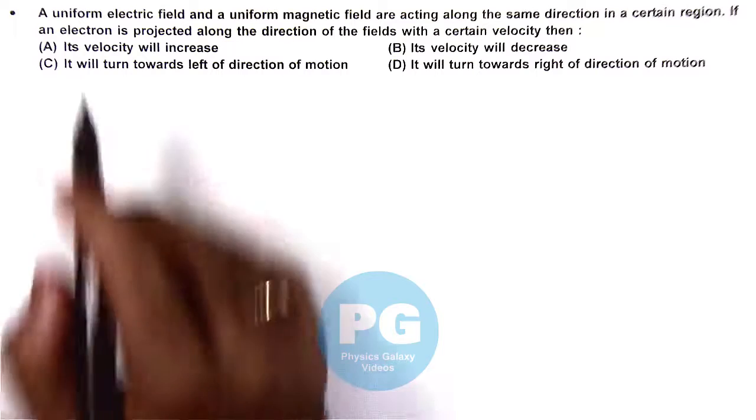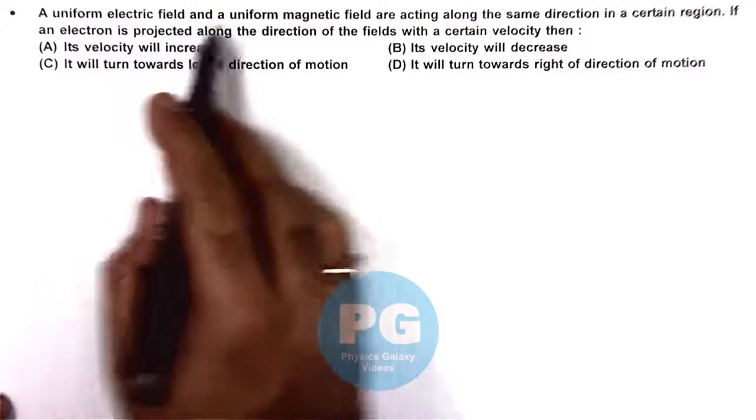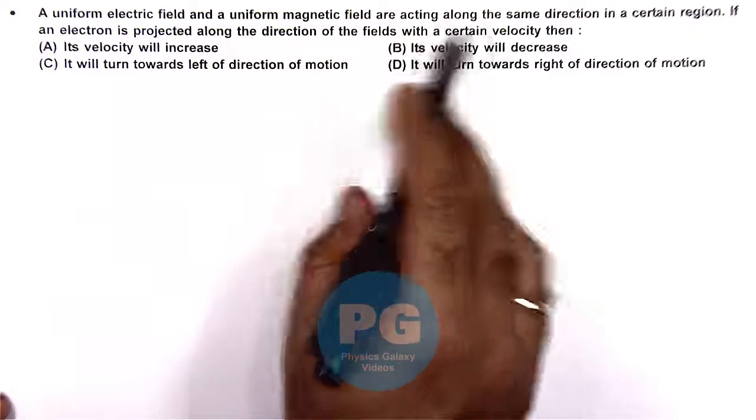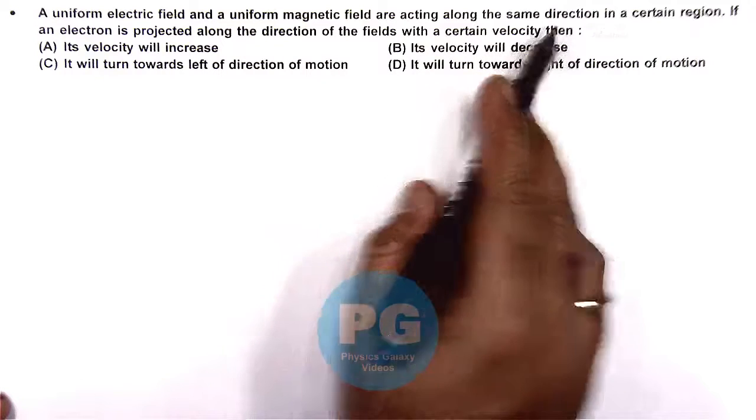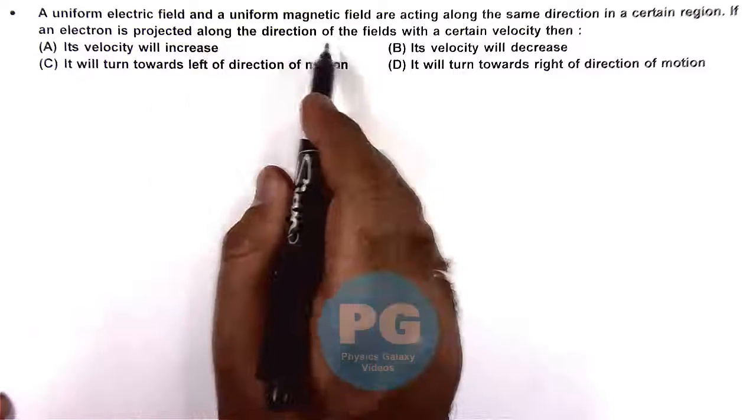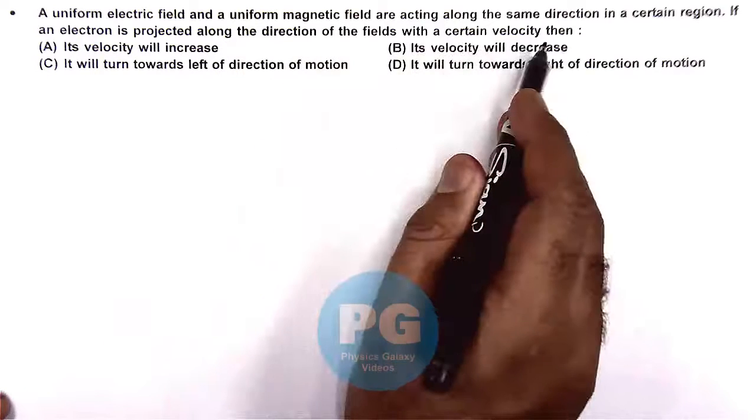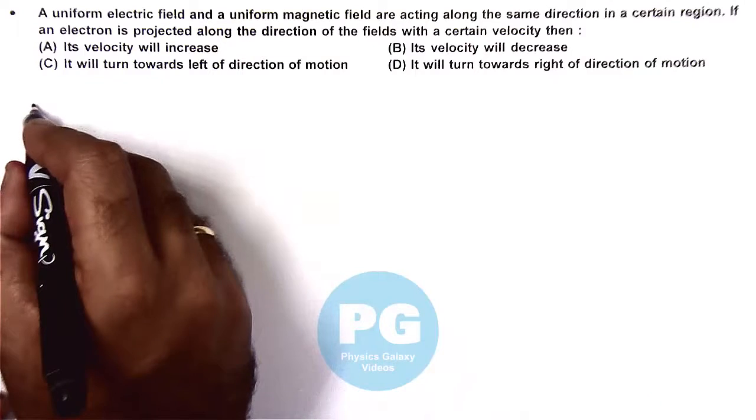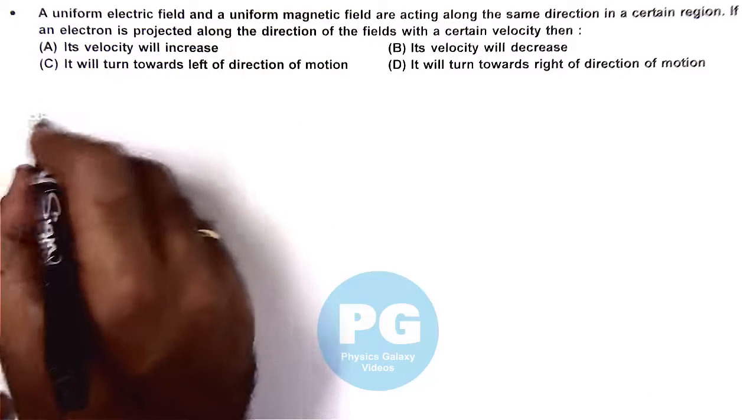In this question, a uniform electric field and a uniform magnetic field are acting along the same direction in a certain region. If an electron is projected along the direction of the fields with a certain velocity, we need to check what happens to the velocity of this electron.